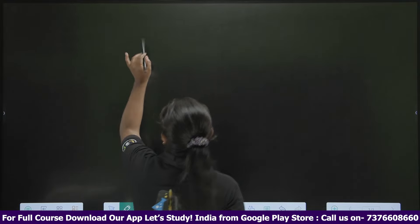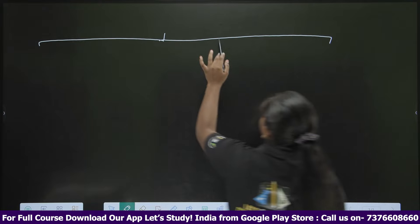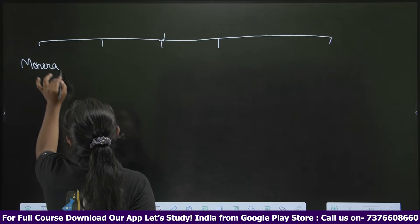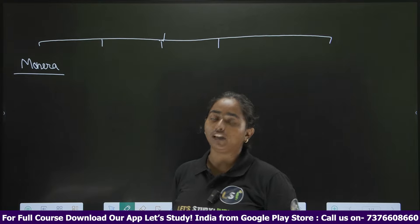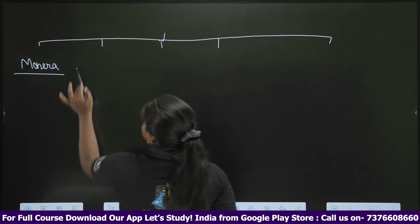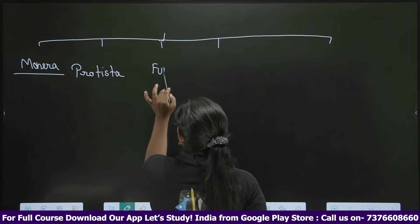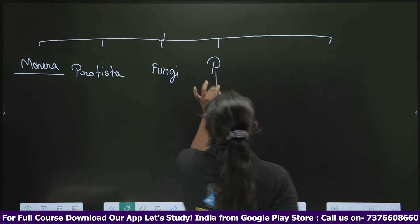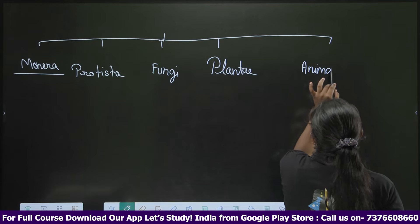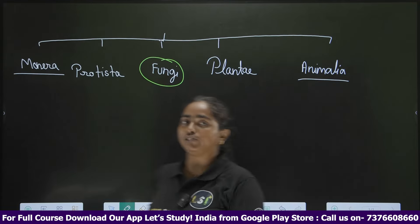So first, we need to understand that fungi have a different kingdom. In the five-kingdom classification, you have the kingdom Monera — which covers bacteria, mycoplasma, phytoplasma, and actinomycetes. We have Protista, and then the third kingdom we study in detail is Fungi. According to R. H. Whittaker, fungi is its own kingdom, and its characteristics are what we are going to study in this video.